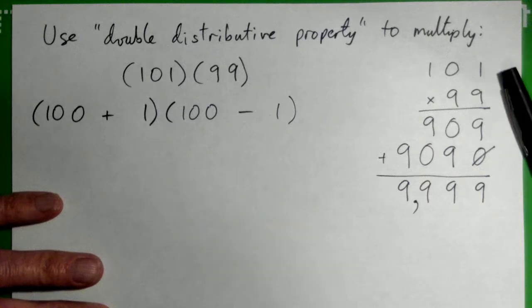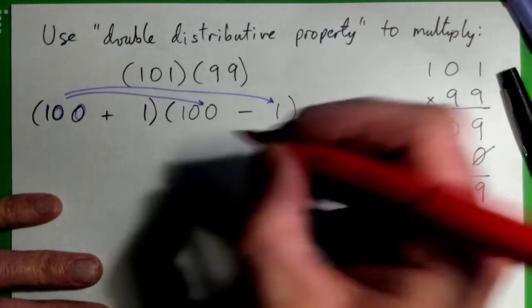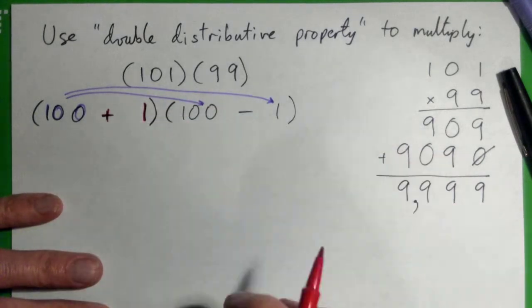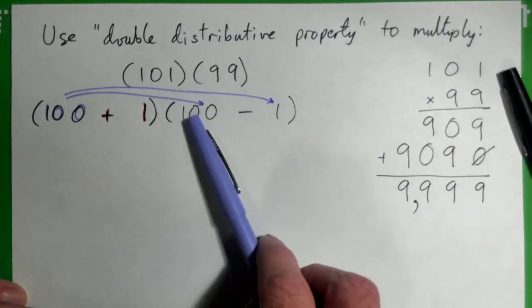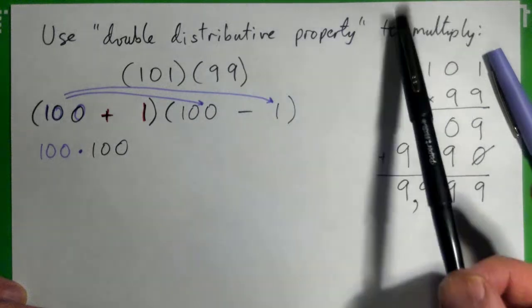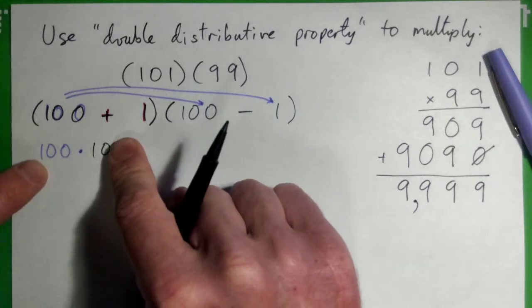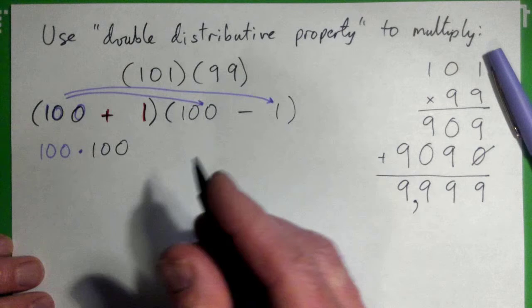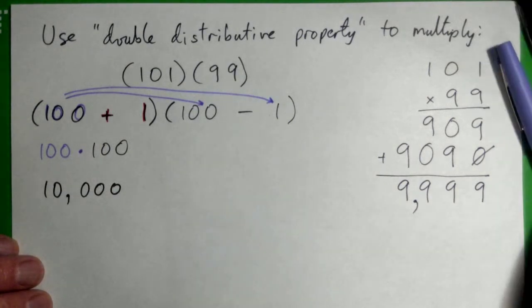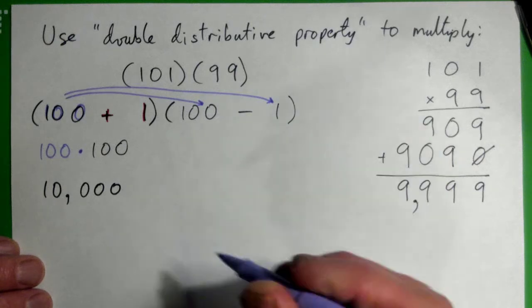So we're going to take this hundred here, we're going to multiply it by that hundred, and then we're going to take the hundred and multiply it by the negative one. And then we're going to multiply the positive one by everything. But let's start out with, what's a hundred times a hundred? Ten thousand. Right, because ten hundreds is a thousand, but a hundred hundreds is actually ten thousand, good. What's a hundred times negative one? Negative one hundred. Yeah, minus one hundred, good.